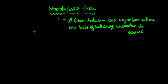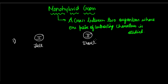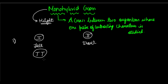So what did Mendel do in this monohybrid cross? He took two pea plants. One pea plant was tall and the other pea plant was short. He considered height as the factor in his monohybrid cross. The tall plant had an allelic combination of capital T and capital T.